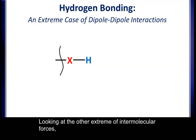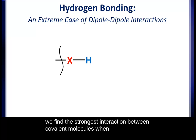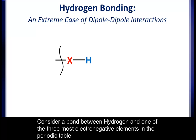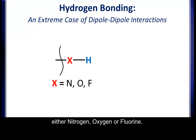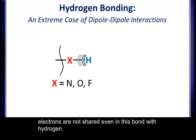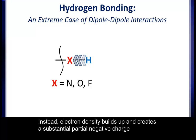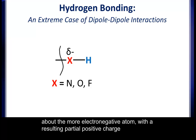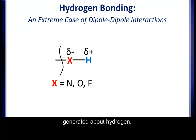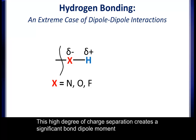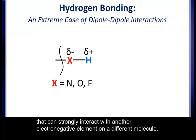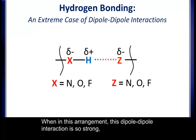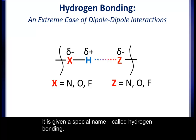Looking at the other extreme of intermolecular forces, we find the strongest interaction between covalent molecules when dealing with highly polarized covalent bonds. Consider a bond between hydrogen and one of the three most electronegative elements — nitrogen, oxygen, or fluorine. Because of their high electronegativity, electrons are not shared evenly in this bond with hydrogen. Instead, electron density builds up and creates a substantial partial negative charge about the more electronegative atom, with the resulting partial positive charge generated about hydrogen. This high degree of charge separation creates a significant bond-dipole moment that can strongly interact with another electronegative element on a different molecule. When in this arrangement, this dipole-dipole interaction is so strong it's given a special name: hydrogen bonding.